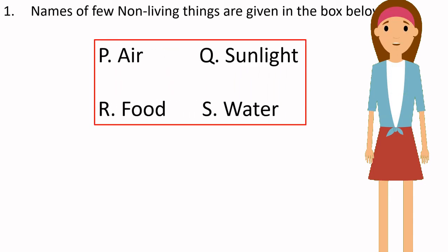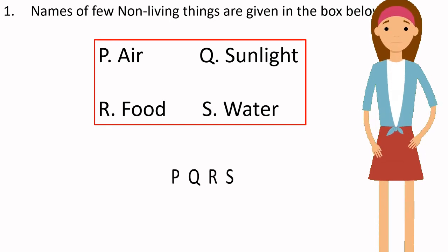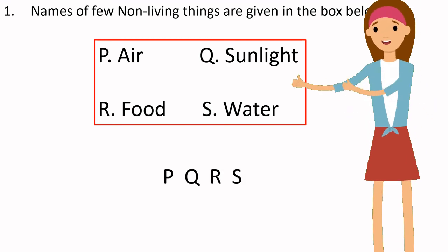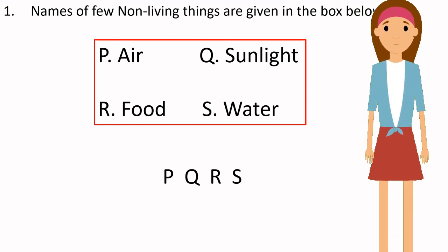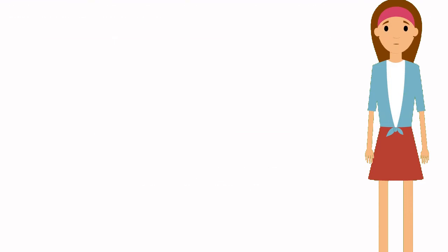Names of a few non-living things are given in the box below. Which of these are needed for living things to survive? Yes, that is right — all of them. Living things need air, sunlight, food and water.